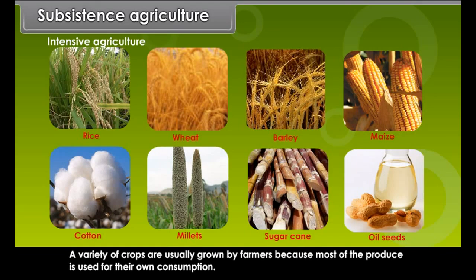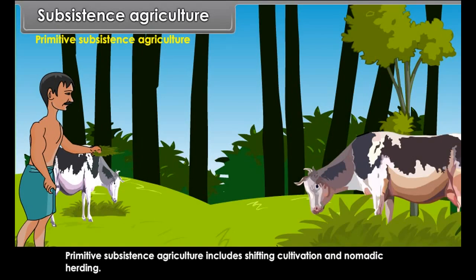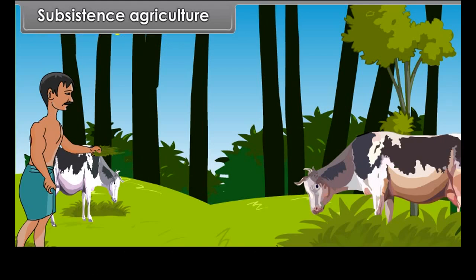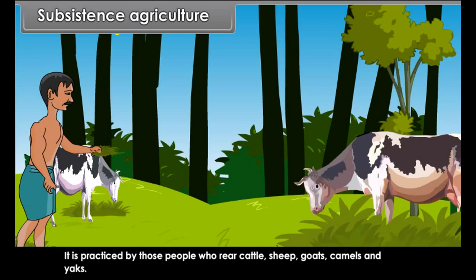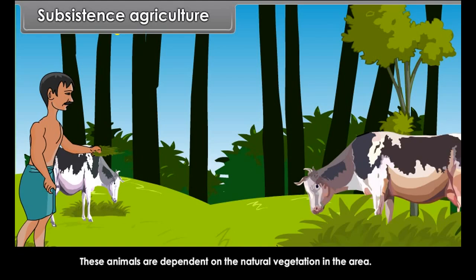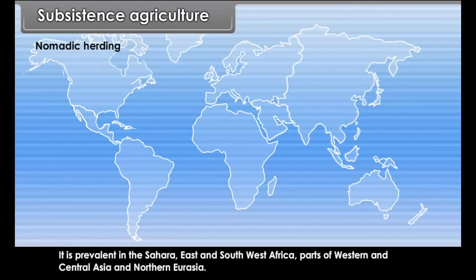A variety of crops are usually grown by farmers because most of the produce is used for their own consumption. Primitive subsistence agriculture includes shifting cultivation and nomadic herding. Nomadic herding is practiced by those people who rear cattle, sheep, goats, camels and yaks, which are dependent on natural vegetation. It is prevalent in the Sahara, East and Southwest Africa, parts of Western and Central Asia, and Northern Eurasia.